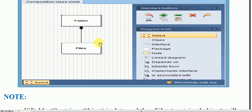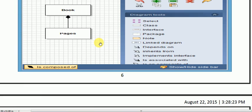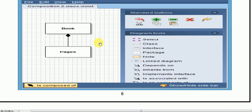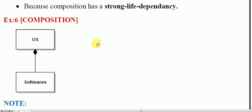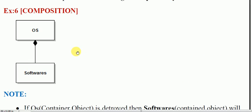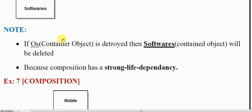We have now seen two examples: one with a folder and a file, and one with a book and pages. Let's see another example of composition — an operating system and software. The operating system, which is our OS like Windows, has software installed in it. If we uninstall or delete any particular software, there will be no effect on Windows. But if we delete or destroy our operating system or Windows, then our software will also be destroyed. So if the operating system — the container object — is destroyed, then the software — the contained object — will be deleted, because composition has a strong life dependency.